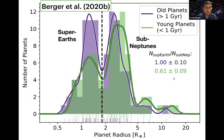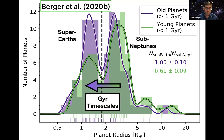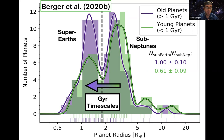This corresponds to roughly a three-sigma difference between the young and old planet histograms in terms of the ratio of super-Earths to sub-Neptunes. This suggests that sub-Neptunes are becoming super-Earths on roughly gigayear timescales — one of the first times this expected timescale has been empirically determined. Originally we thought this gigayear timescale matched better with core-powered mass loss than photo evaporation. However, recent work by Owen and Rogers has shown that photo evaporation can also produce similar behavior on gigayear timescales, so the jury is still out.